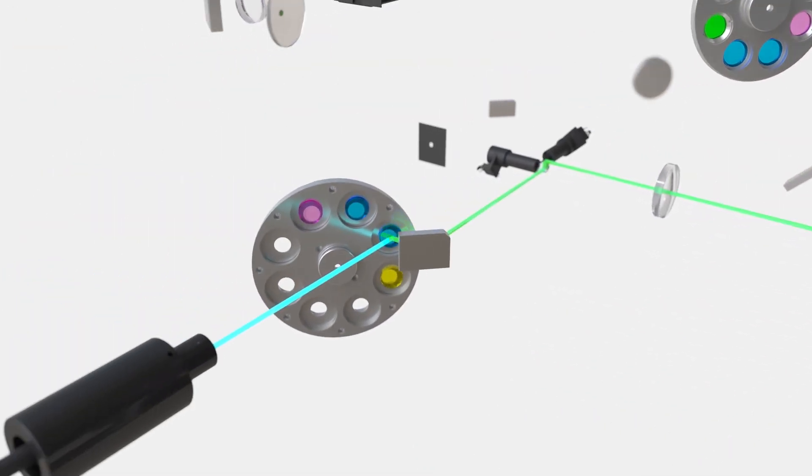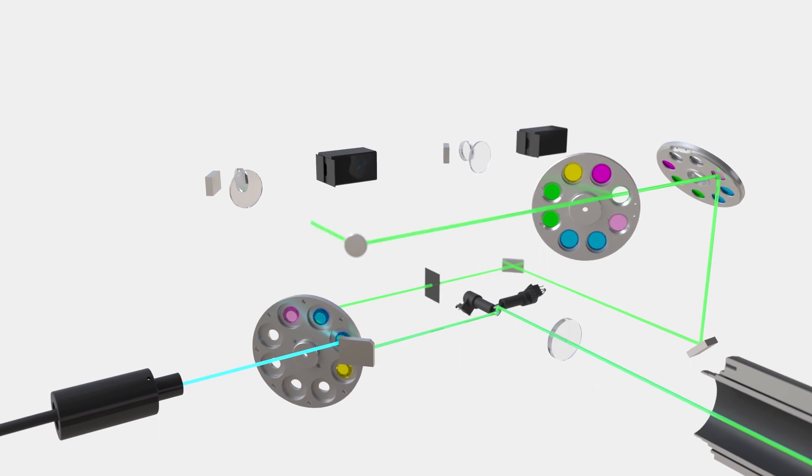Emission light passes back through the scanner along the same path as the excitation light, passing through the excitation dichroic and up to the TrueSpectral detector deck.